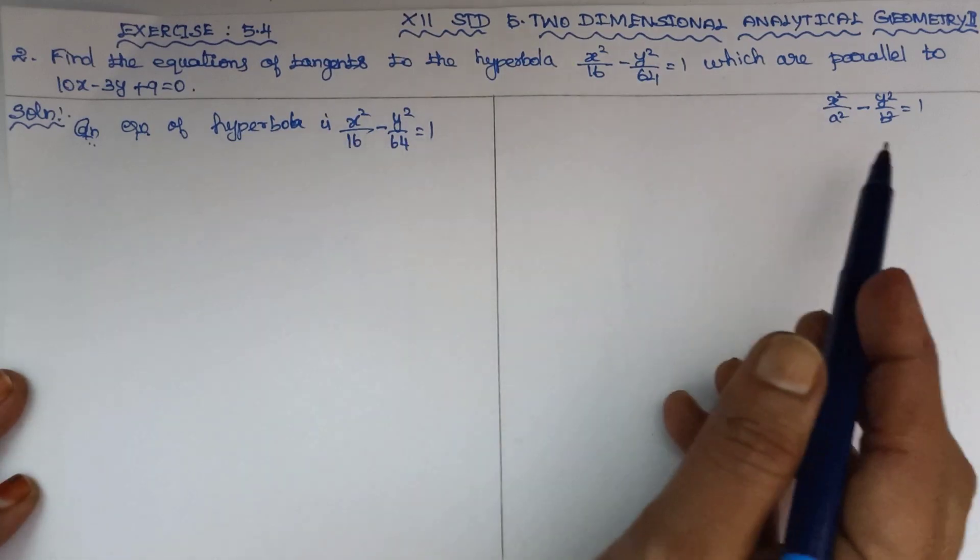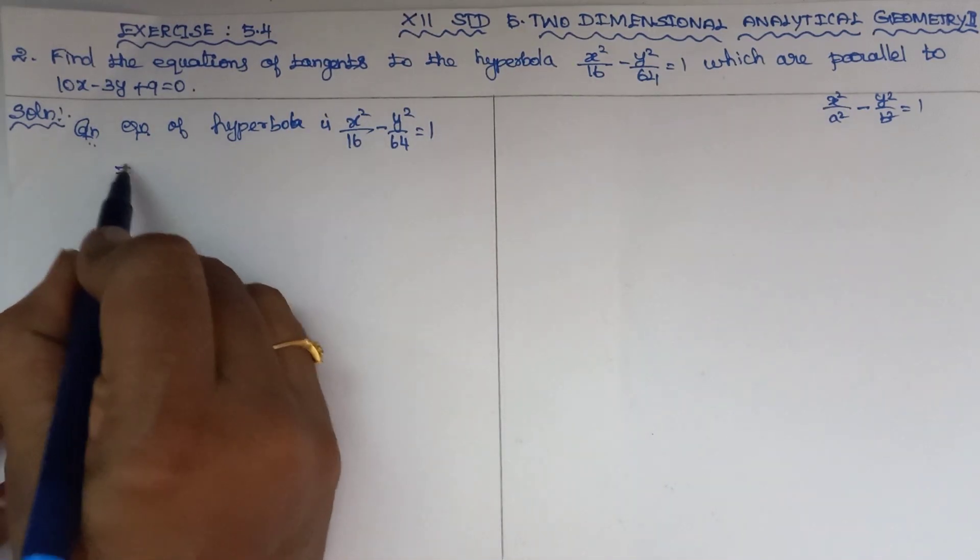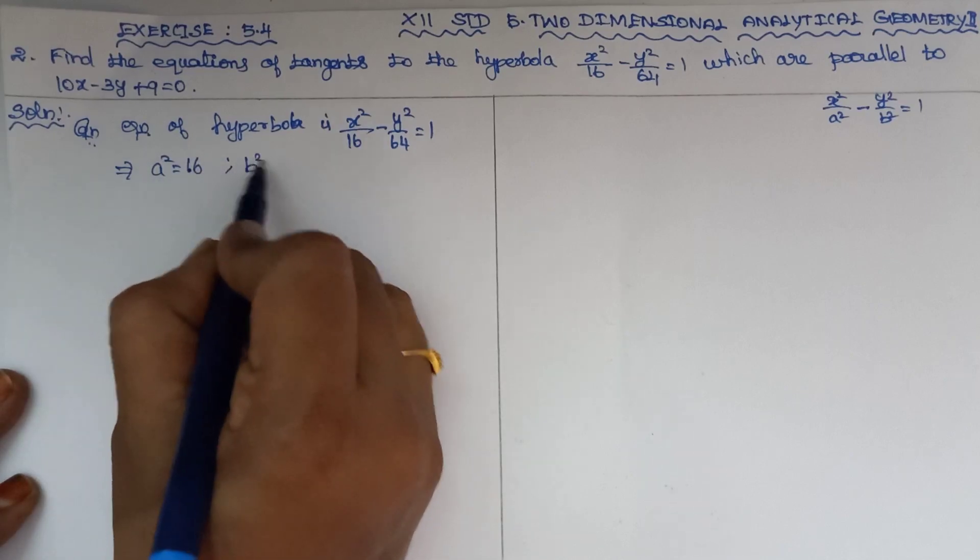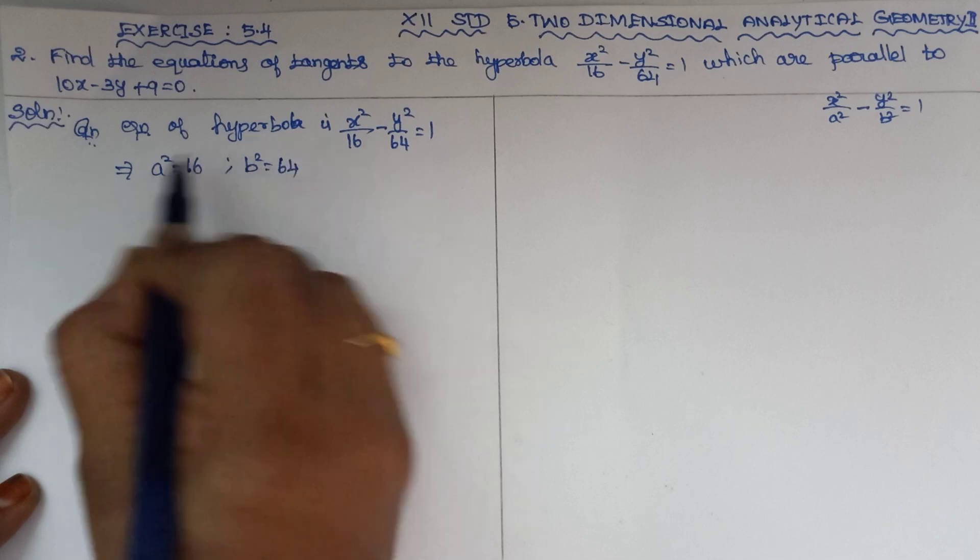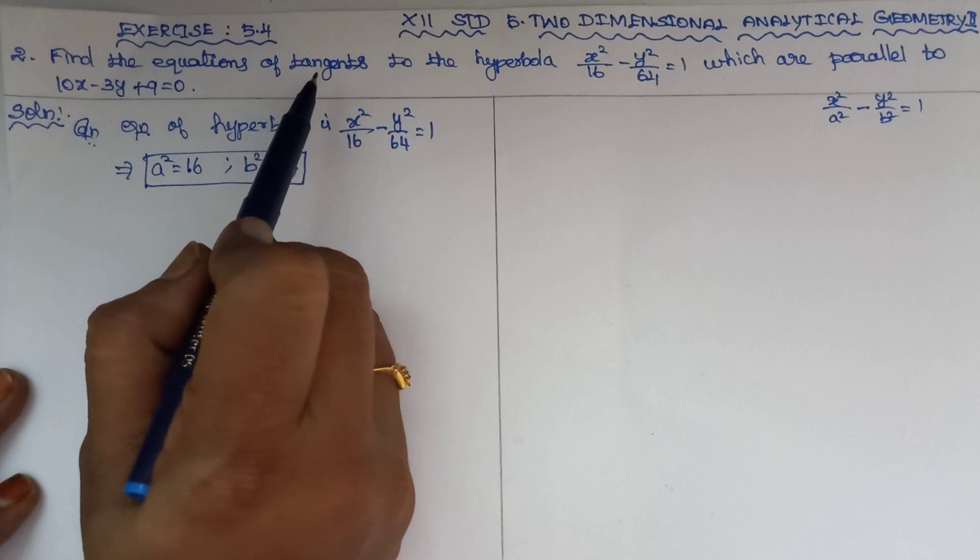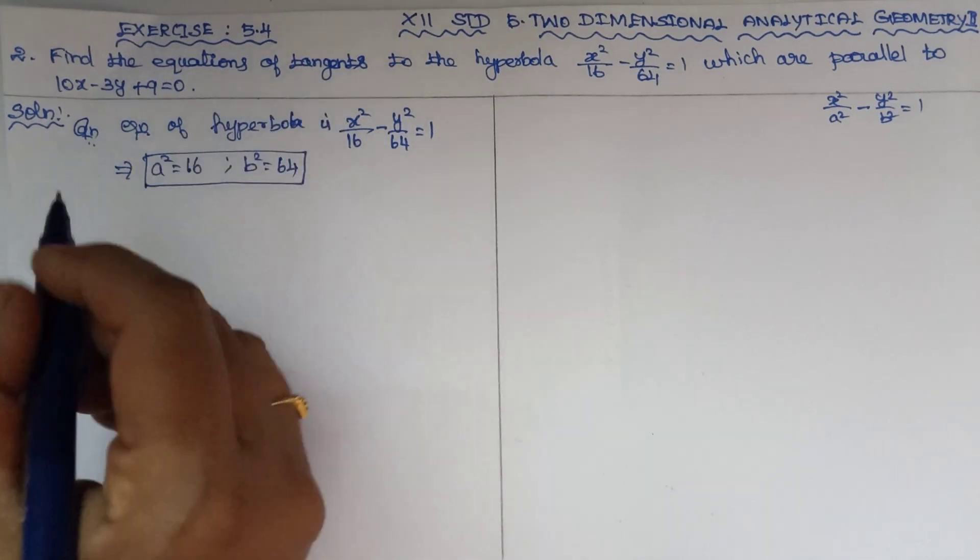A square is 16 and b square is 64. So we find out: a square equal to 16 and b square equal to 64.